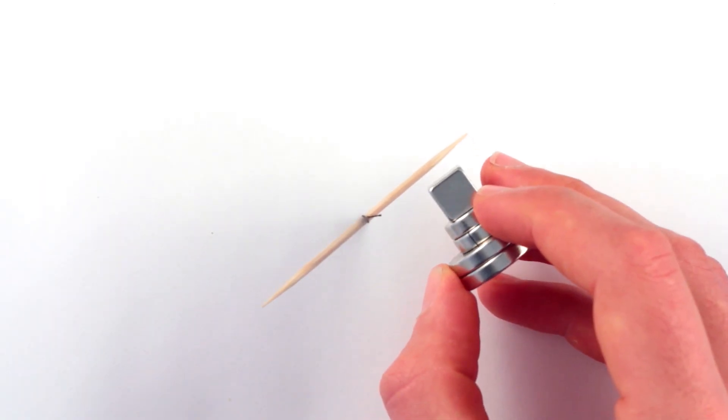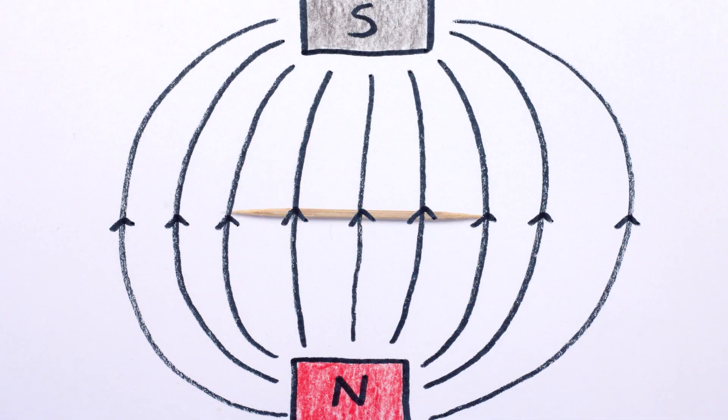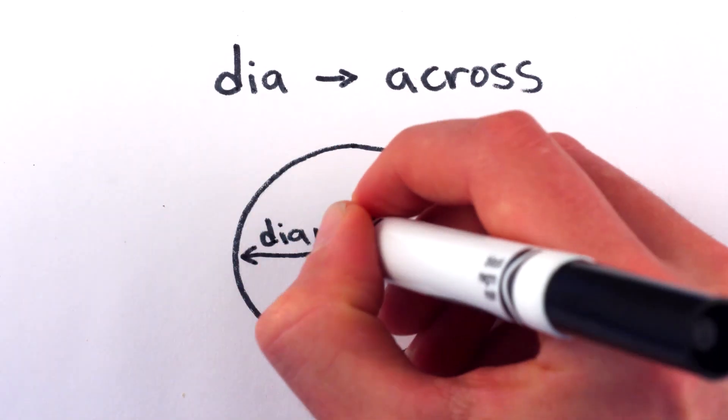For example, if you hang a wooden toothpick in a magnetic field, the ends will repel the field and it'll end up aligning across the field. This is a convenient way to remember the name of this kind of magnetism, diamagnetism, since dia means across, like the diameter measured across a circle.